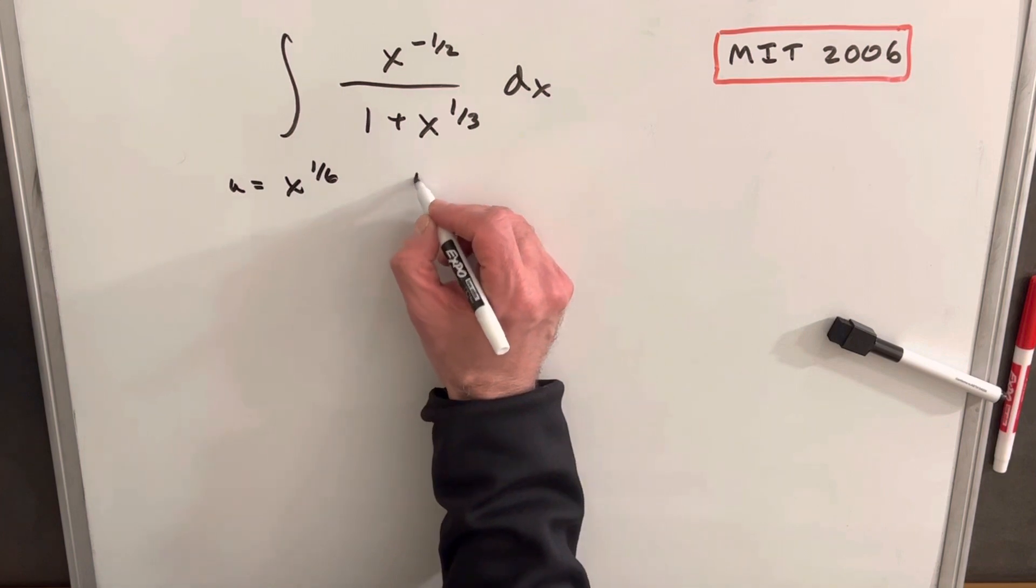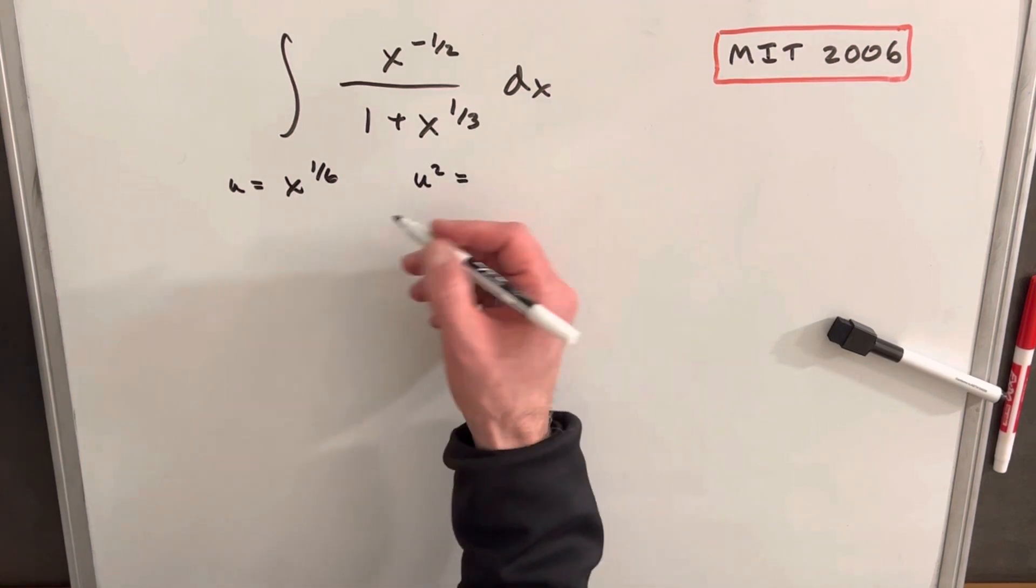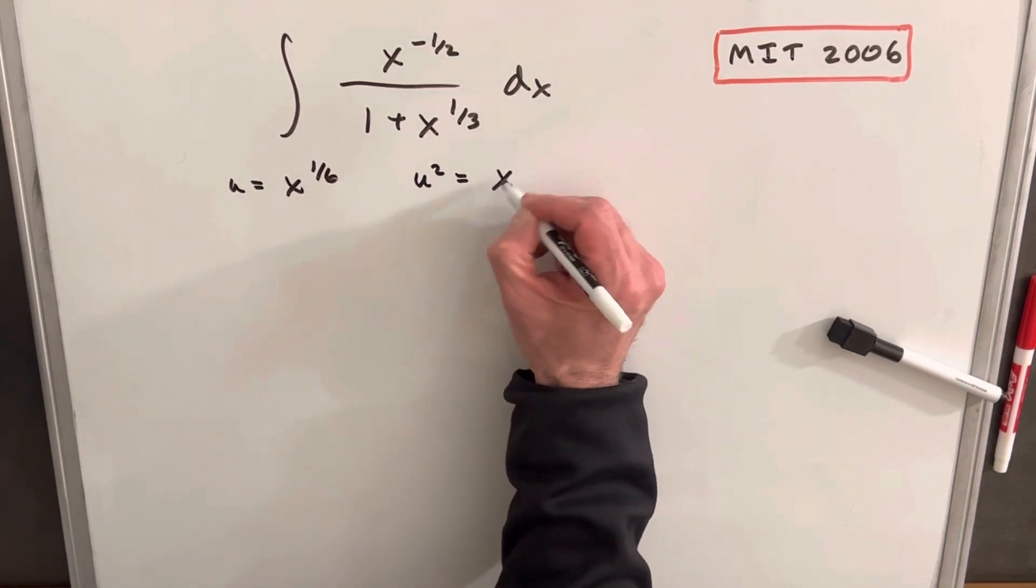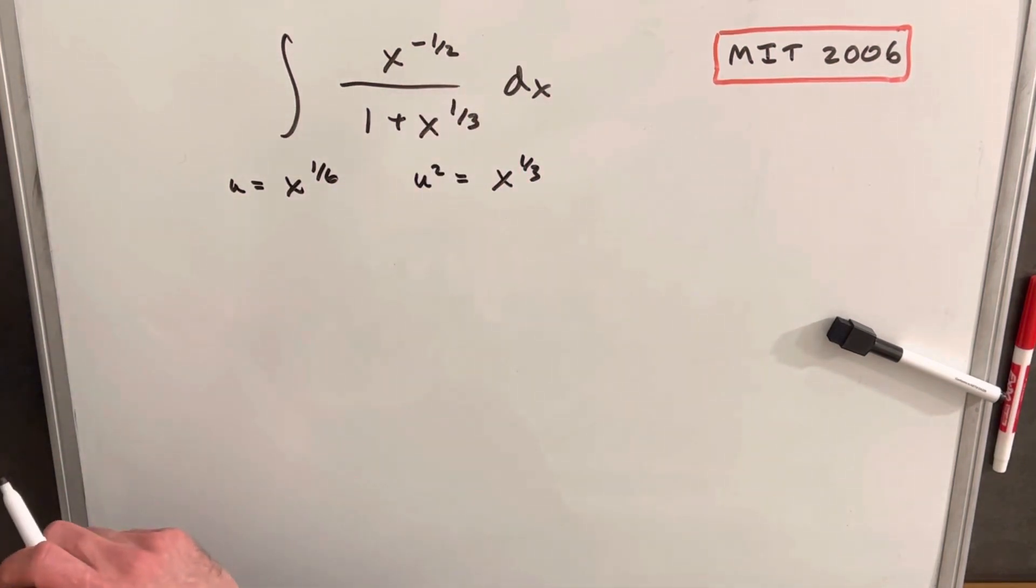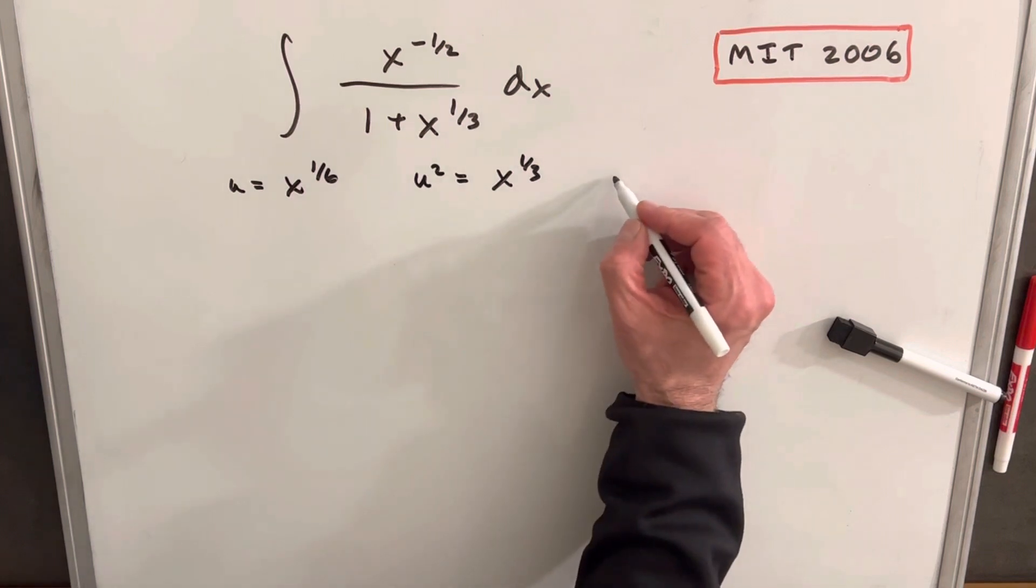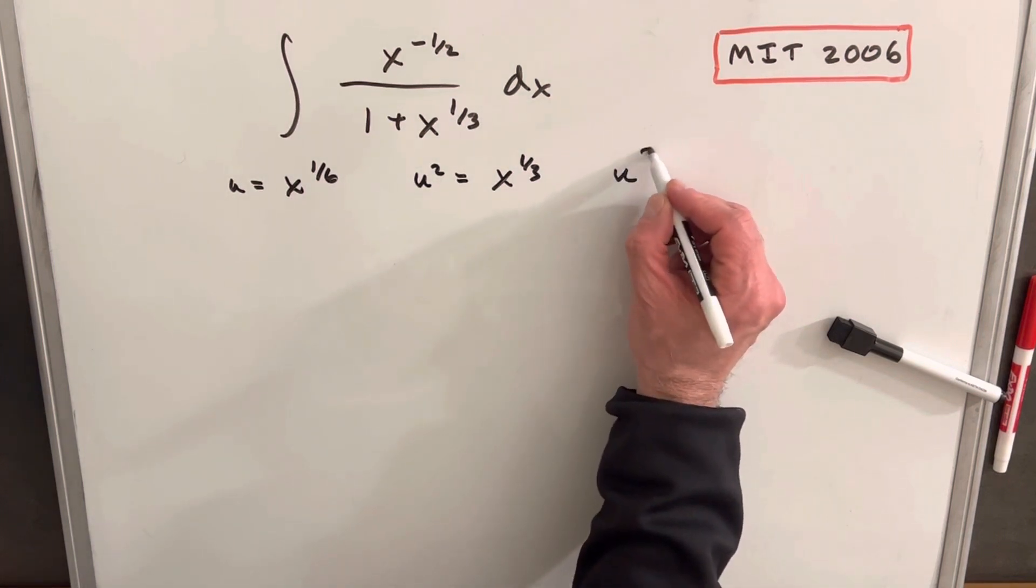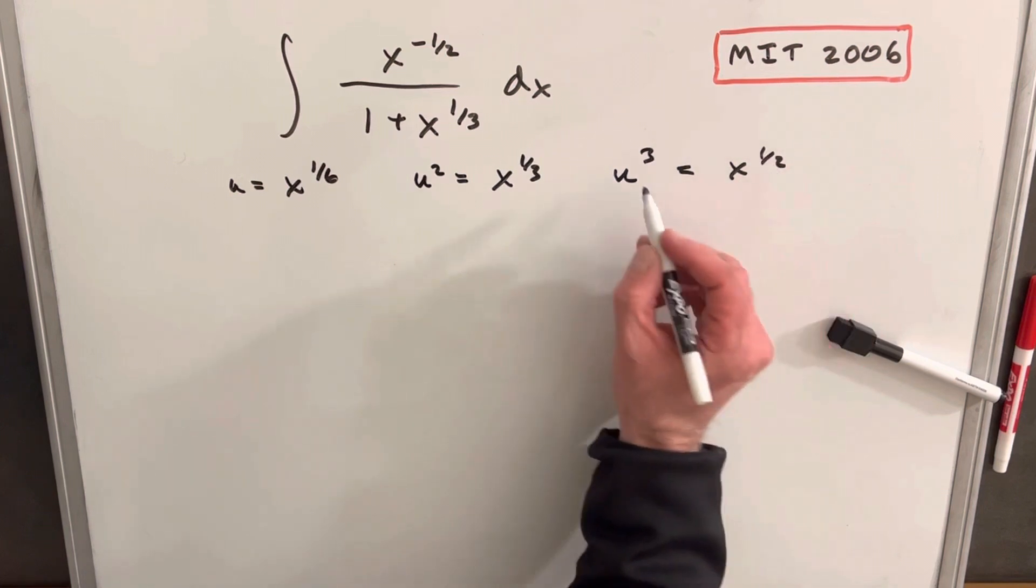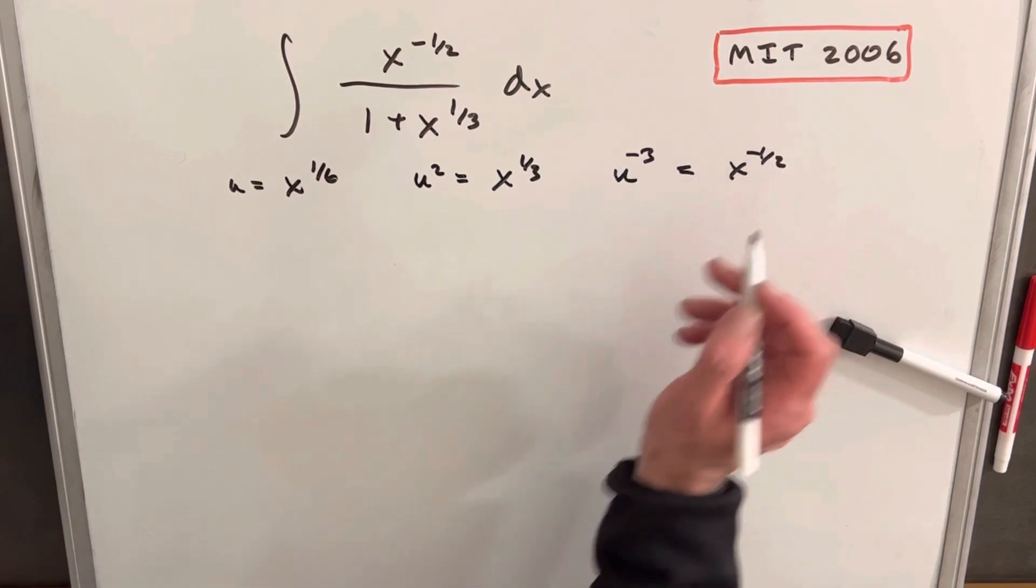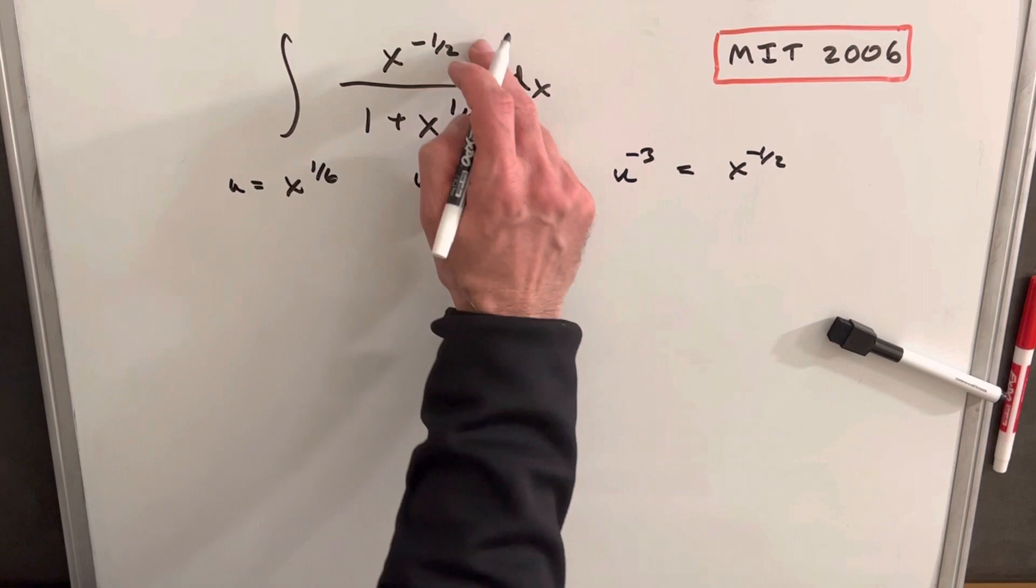Then if we look at our u-squared, we'll notice that that's just going to be, that squared is going to be x to the one-third. Let's get something for x to the minus one-half. So u to the third would be x to the one-half. If we just make that power negative, we'll have an x to the negative one-half, so we have an expression for the numerator now.